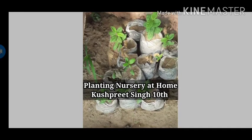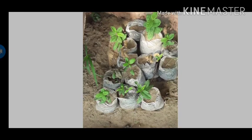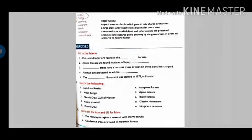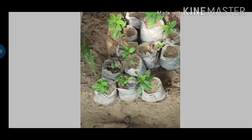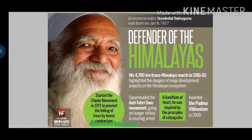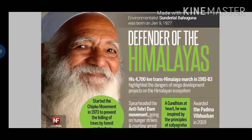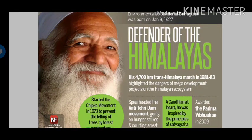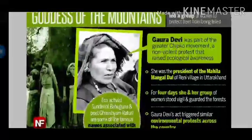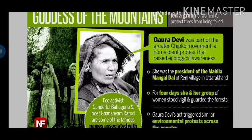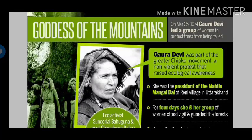One of my students has shared a method — he has planted a small nursery at his home, and he is in class 10th. I would like to tell all students to start growing nurseries at your home so that you can plant more and more trees in vacant areas. I hope this chapter is clear to you. This picture is of Sundar Lal Bahuguna, who was born on January 9th. He was one of the leaders of the Chipko movement and was awarded the Padma Vibhushan award in India.